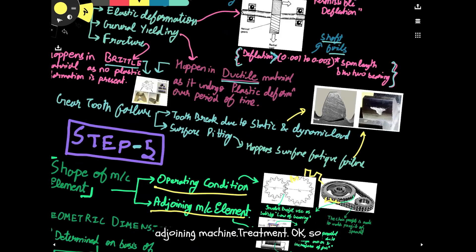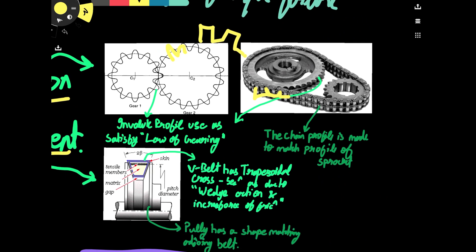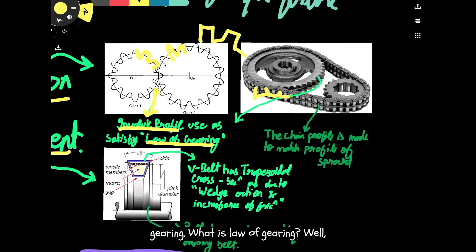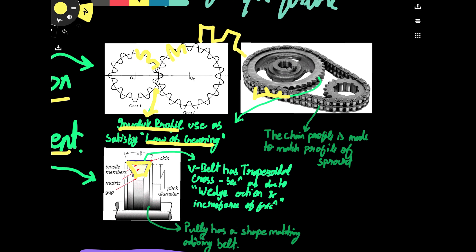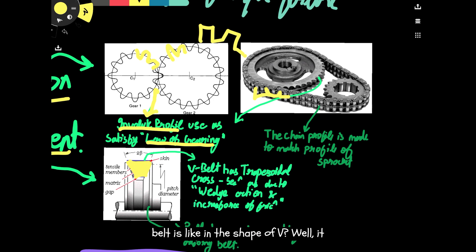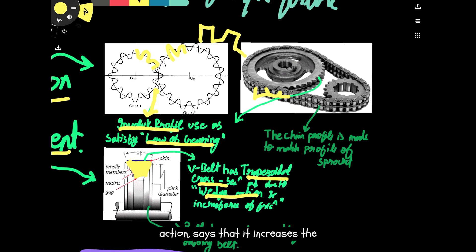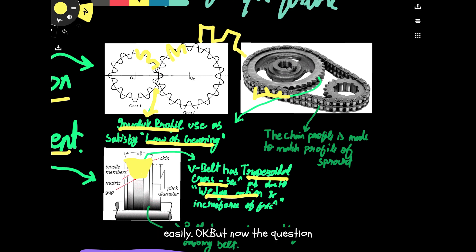Why are gears shaped the way they are? This shape is known as the involute profile and it satisfies the law of gearing, which states that two rotating bodies transfer motion without any slippage. For the V-belt, it has a trapezoidal cross-section because of the wedge action, which increases the force of friction and helps transmit force more easily.